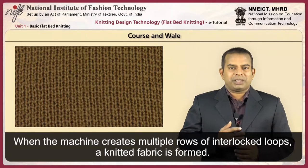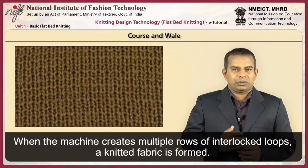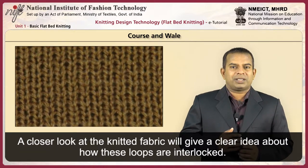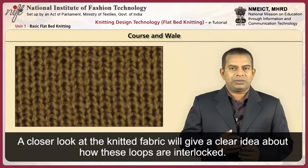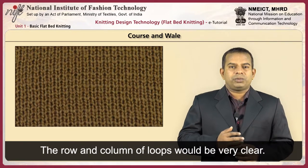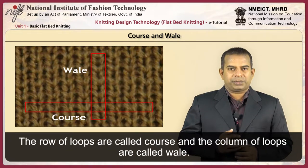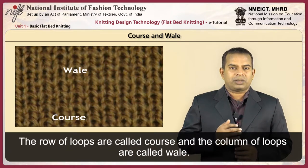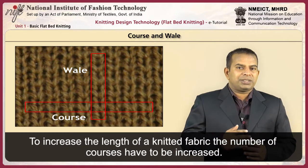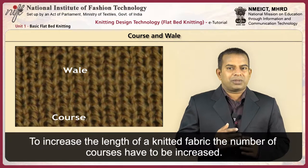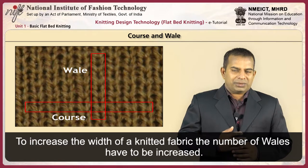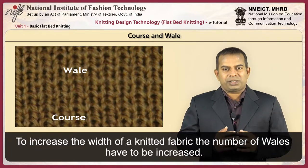When the machine creates multiple rows of interlocked loops, a knitted fabric is formed. A closer look at the knitted fabric gives a clear idea about how these loops are interlocked. The row and column of loops are very clear. The rows of loops are called courses and the columns of loops are called wales. To increase the length of a knitted fabric, the number of courses has to be increased; to increase the width, the number of wales has to be increased.